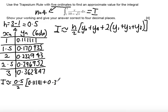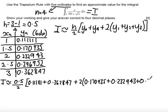Plus two lots of the y values in between, so 0.170935 plus 0.232943 plus 0.296952.